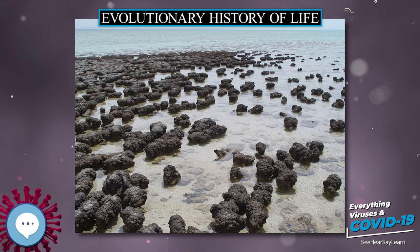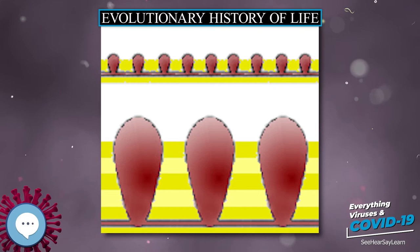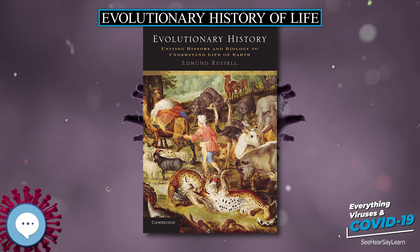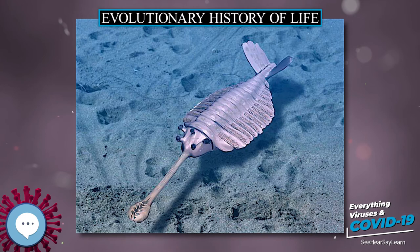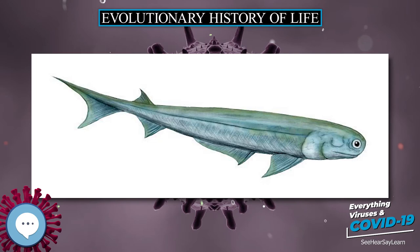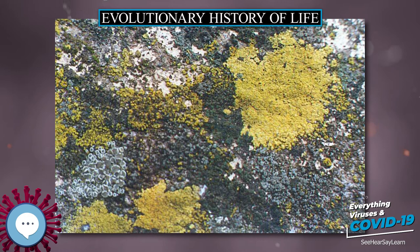Approximately 1 trillion species currently live on Earth, of which only 1.75 to 1.8 million have been named and 1.6 million documented in a central database. These currently living species represent less than 1% of all species that have ever lived on Earth. The earliest evidence of life comes from biogenic carbon signatures and stromatolite fossils discovered in 3.7 billion-year-old metasedimentary rocks from Western Greenland.